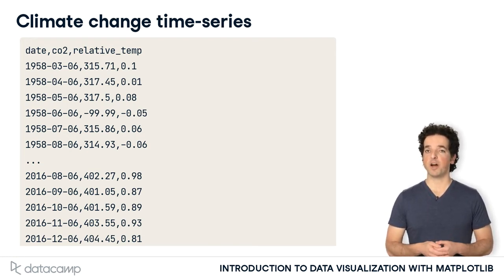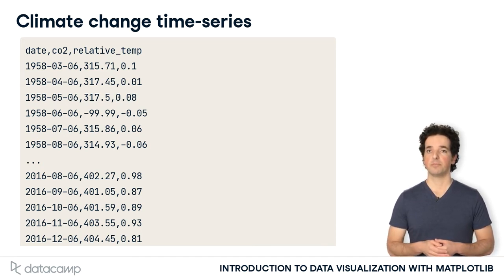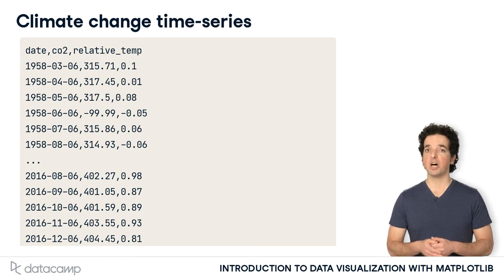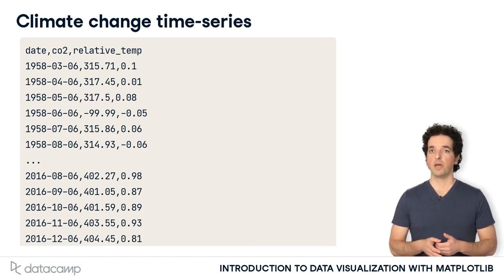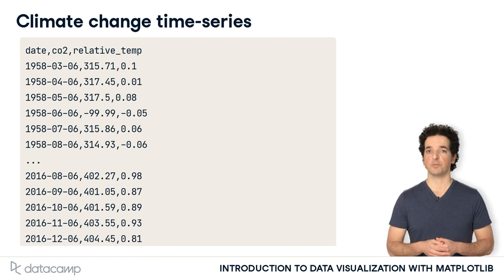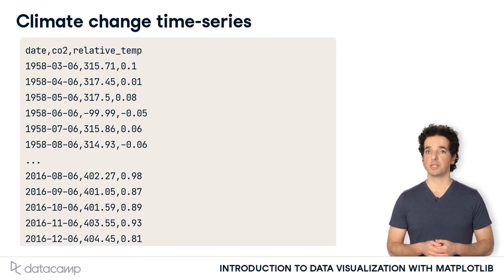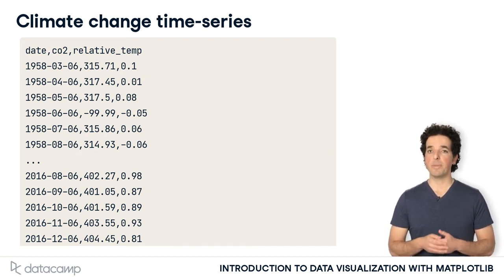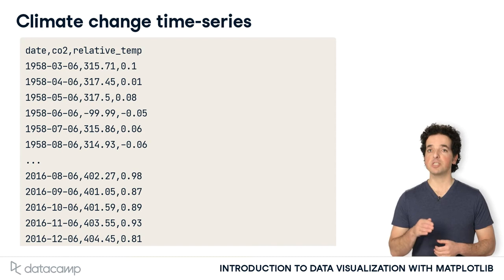The data is in a CSV file with three columns. The date column indicates when the recording was made and is stored in the year, month, date format. A measurement was taken on the sixth day of every month from 1958 until 2016. The column CO2 contains measurements of the carbon dioxide in the atmosphere — the number shown in each row is parts per million of carbon dioxide. The column relative_temp denotes the temperature measured at this date, relative to a baseline, which is the average temperature in the first 10 years of measurements.